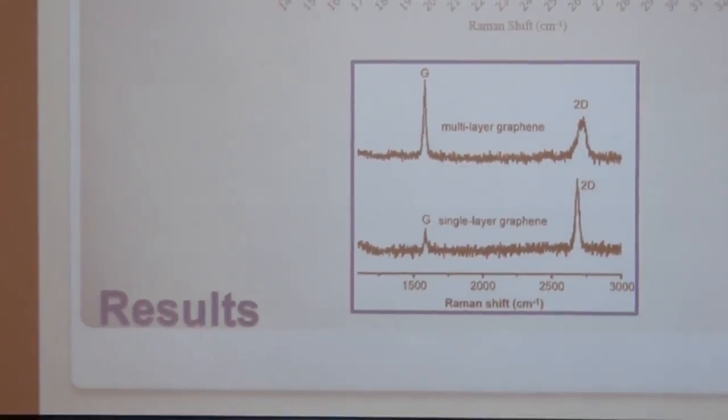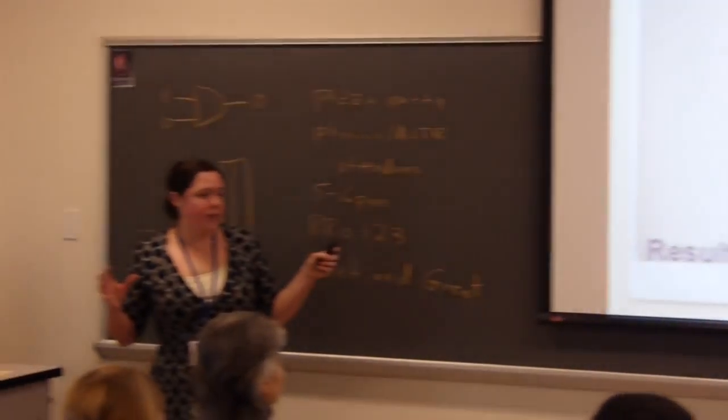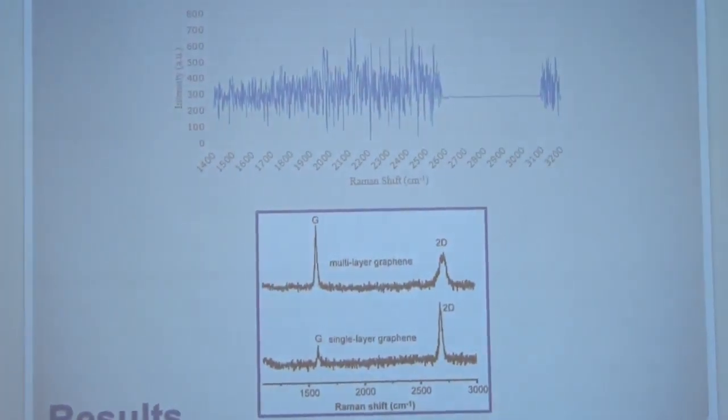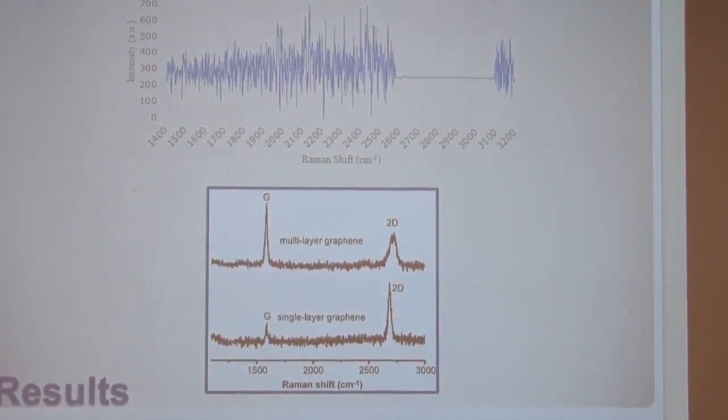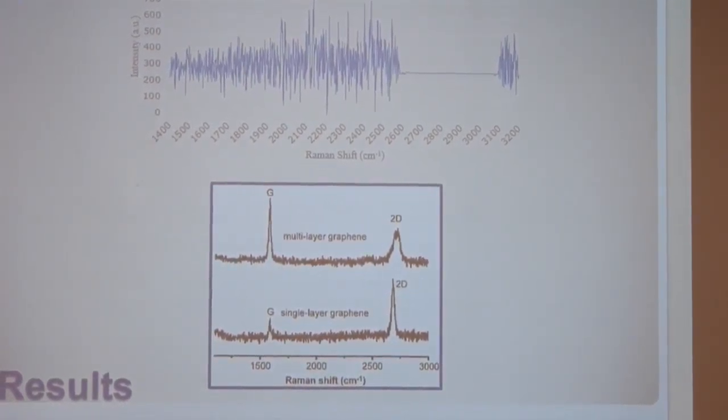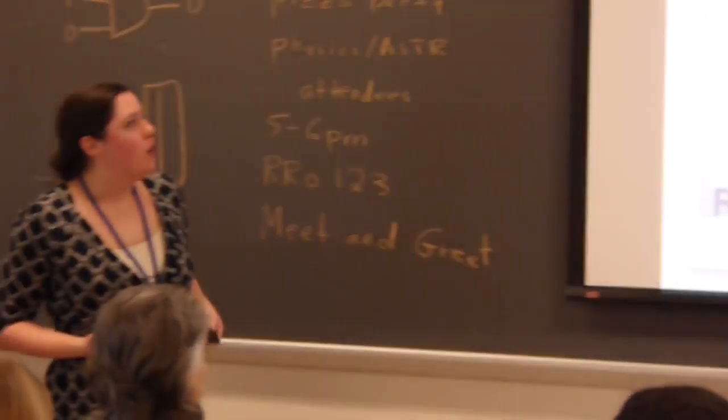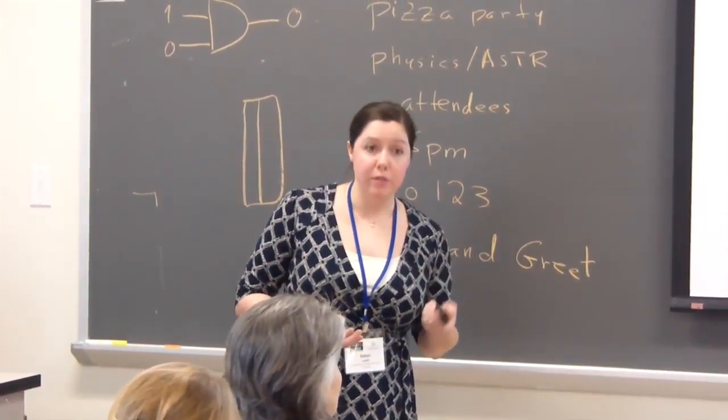And, for most of the samples, we were getting this. So, it's super noisy, except then, right there, where we would expect to see the peak for graphene, just nothing. So, we did a little research and realized that the polyamide film that we're using has a photoluminescent effect right in this area with the 535 nanometer laser that we've been using.